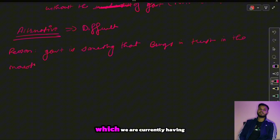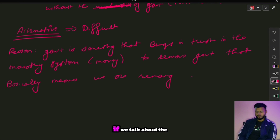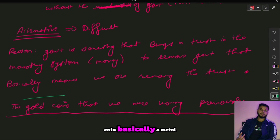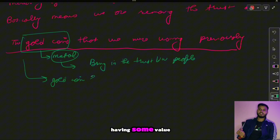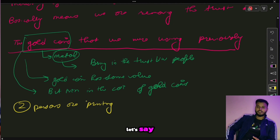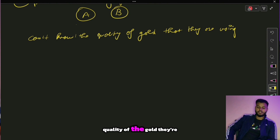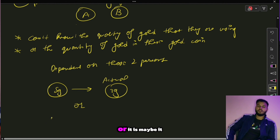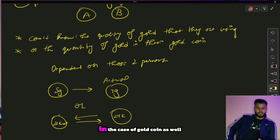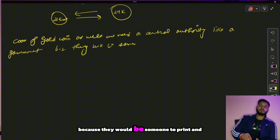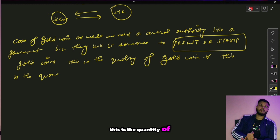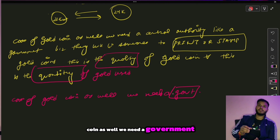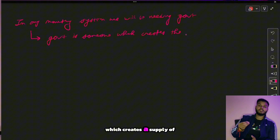If we talk about the gold coins used previously, metal brought trust between people that the coin had value. But even with gold coins, if two people are minting coins at home we can't verify the quality or quantity of gold — they might mark it as five grams when it's only three, or claim 24 karat when it's 22 karat. So in the case of gold coins as well we need a central authority like a government to stamp and certify the quality and quantity. In any money system, you need a government to manage supply and demand.